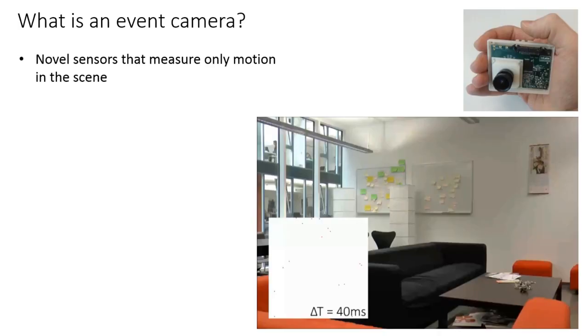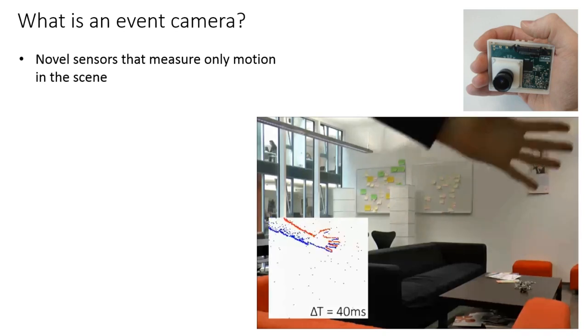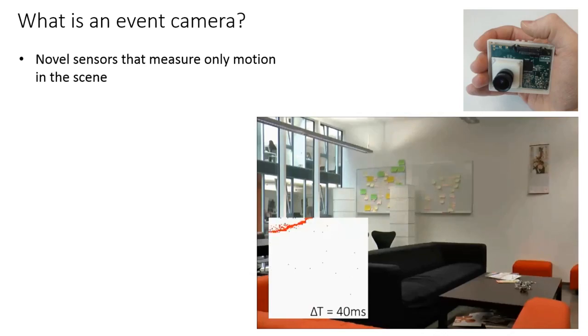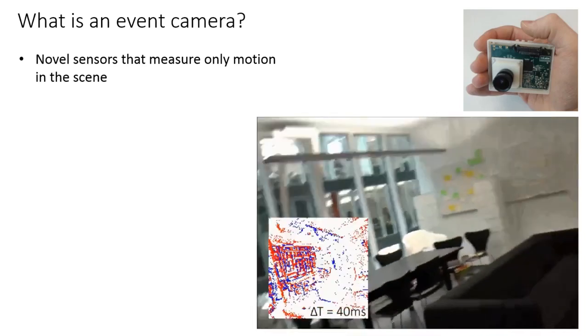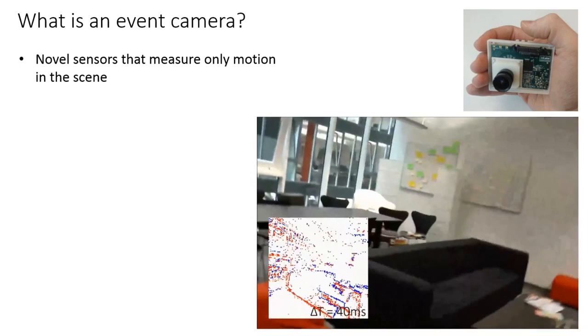Event cameras are novel sensors that measure only motion in the scene. When we keep an event camera steady, only motion in the scene generates events. However, when we start moving an event camera, gradients in the scene become visible.